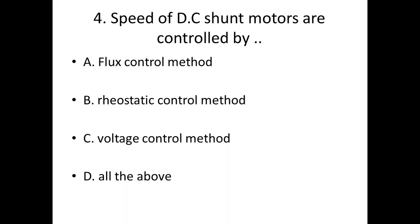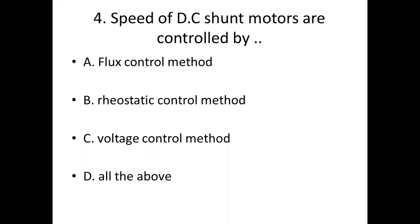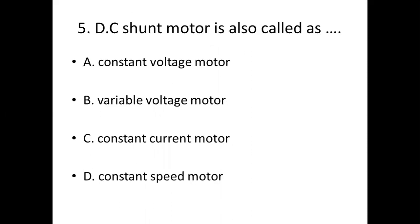Fourth bit: Speed of DC shunt motors are controlled by — Option A: flux control method. Option B: rheostatic control method. Option C: voltage control method. Option D: all of the above. Answer: Option D, all of the above.